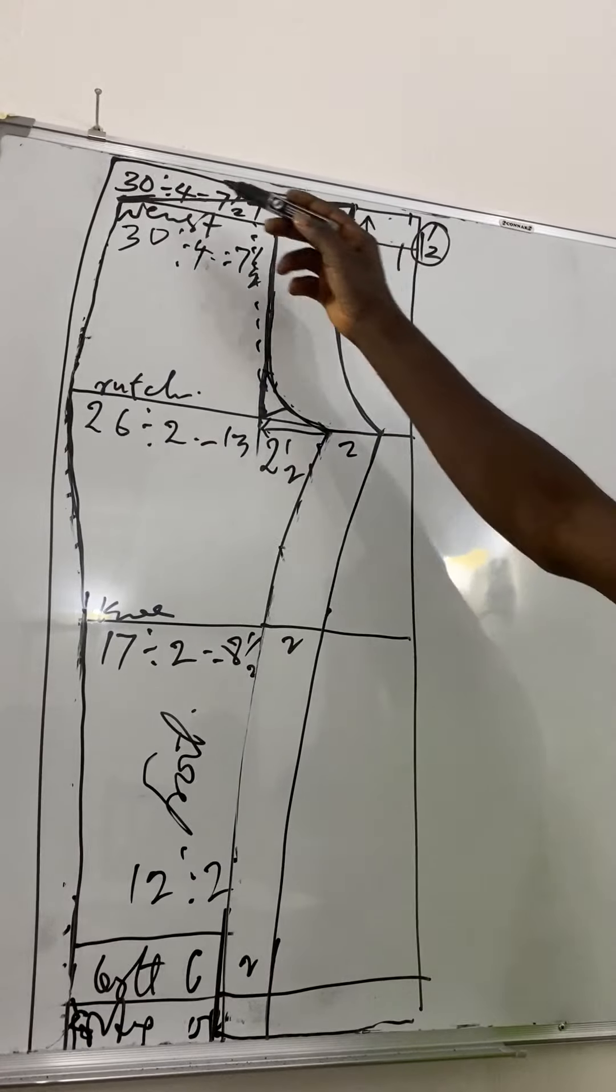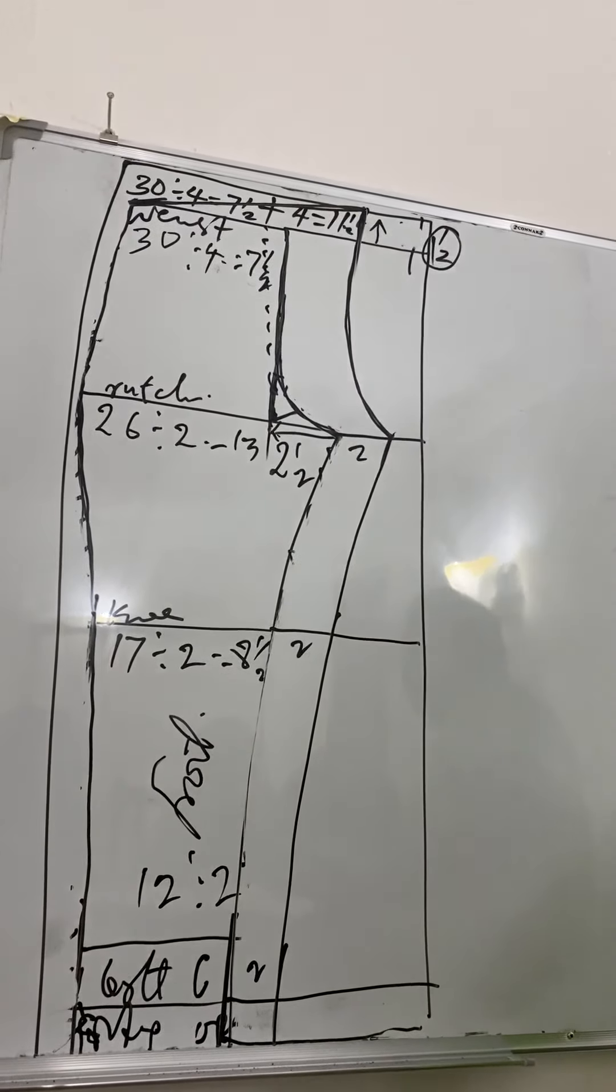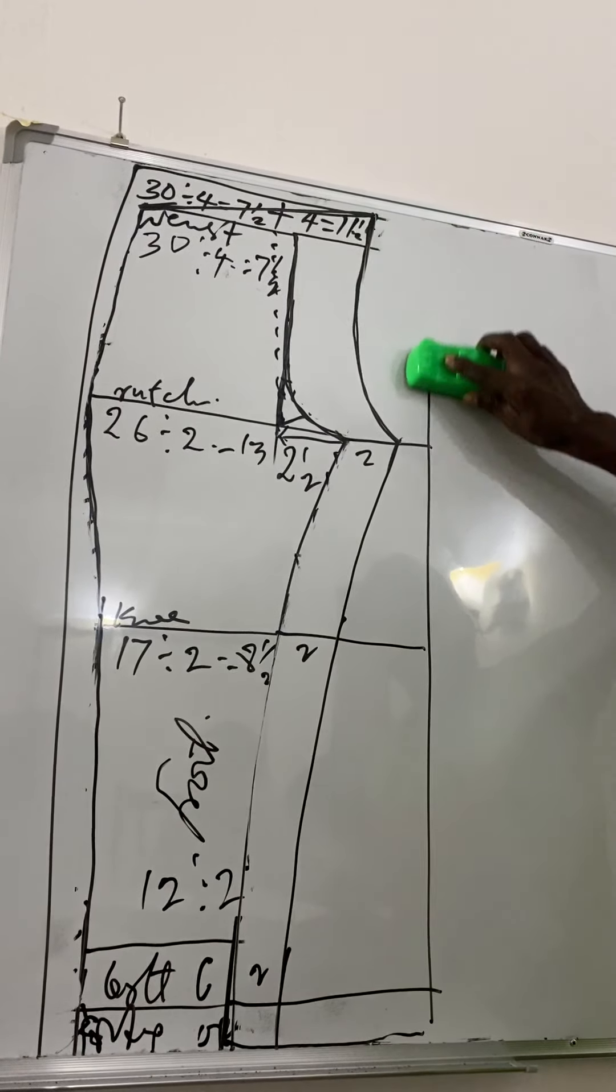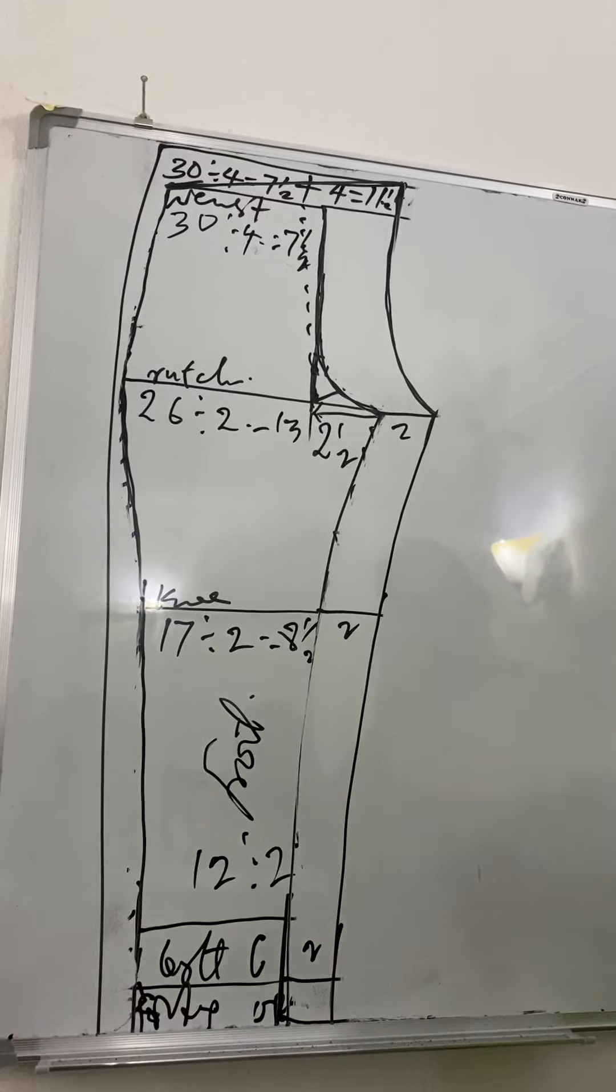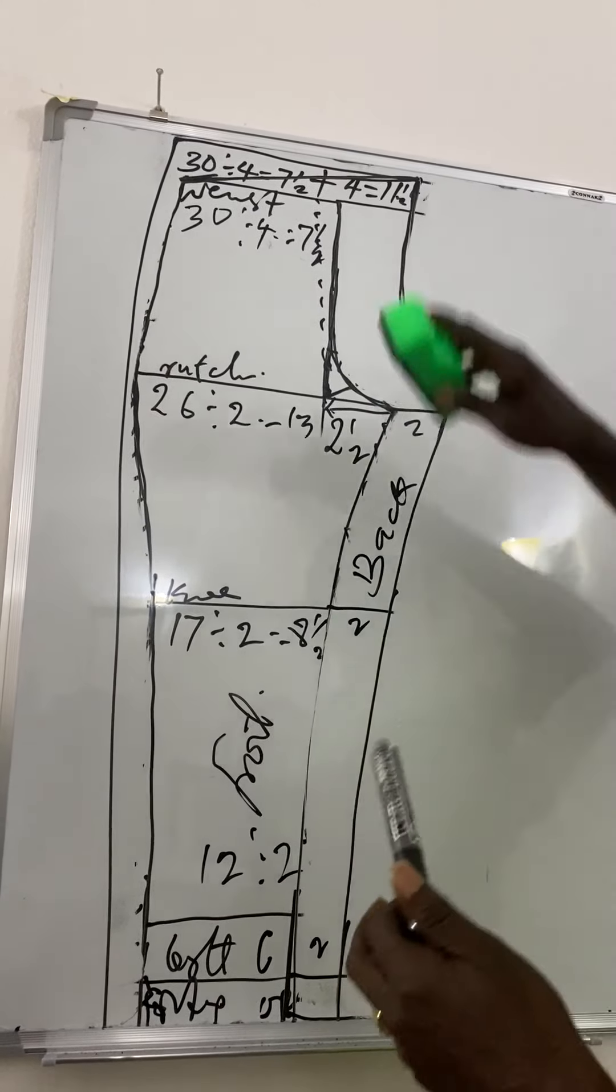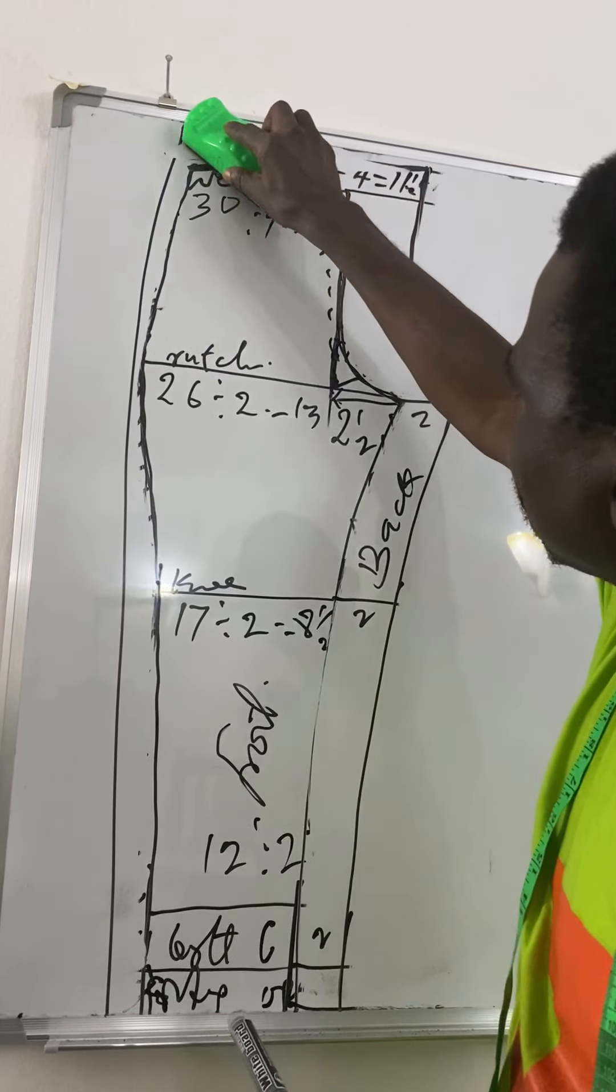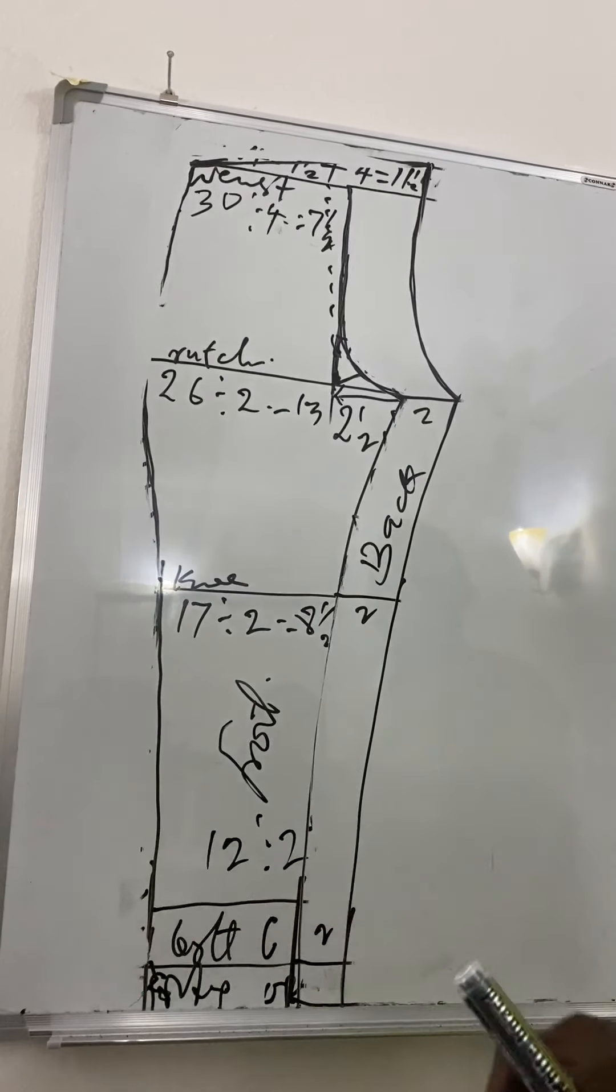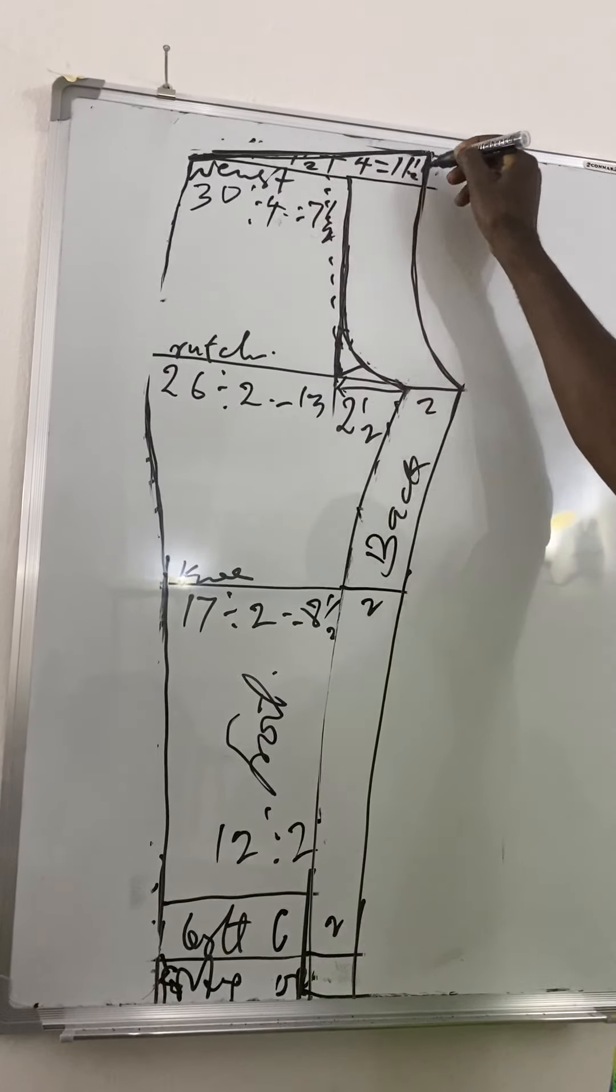So, it's equal measurement here while up here is higher. So, we're going to move this out. This is your pattern for back now. This is back. Then, see the shape. This. You see? So, this is back.